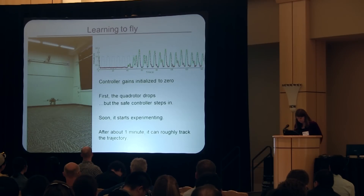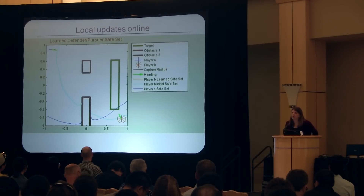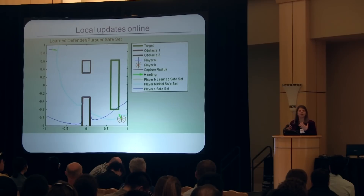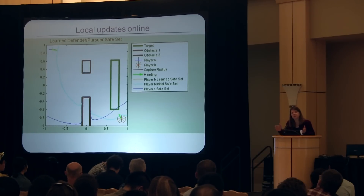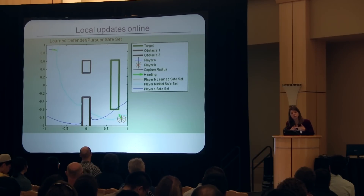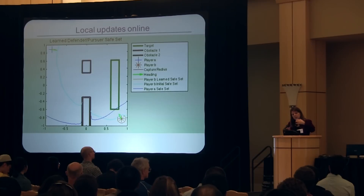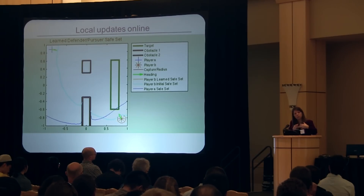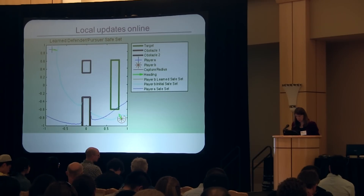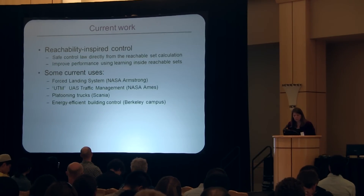We've also used this to think about not only updating the model inside the reachable set, but once you learn more about the disturbances you can actually update the reachable set itself while still maintaining guarantees of safety. We apply machine learning to update the model of the system and the disturbance model locally. As the vehicles approach the boundaries of their reachable set and learn more about their behavior, you can see these boundaries locally growing — you develop a new reachable set which maintains the safety guarantees.